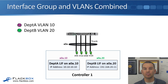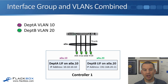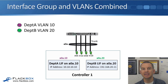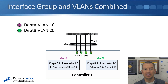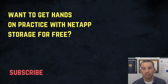This is how we can use VLAN interfaces to allow department A and department B to burst above what they would have been able to with dedicated interface groups, while still keeping them separate and secure from each other.